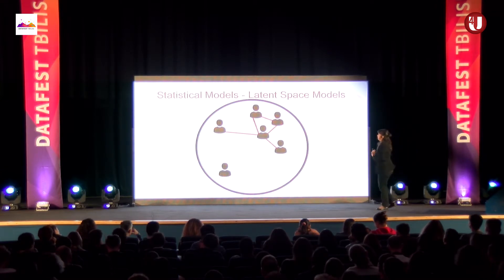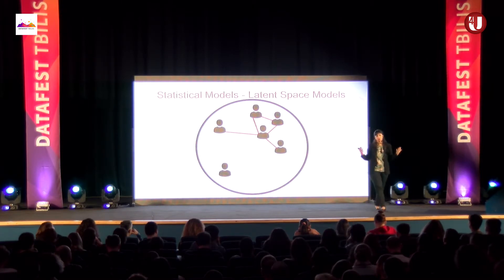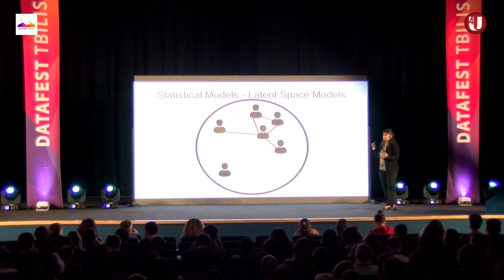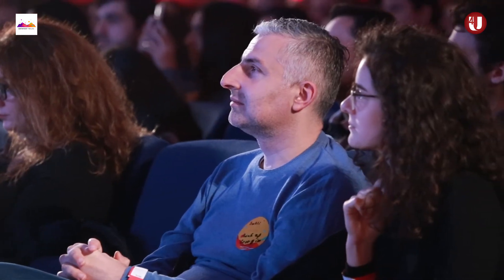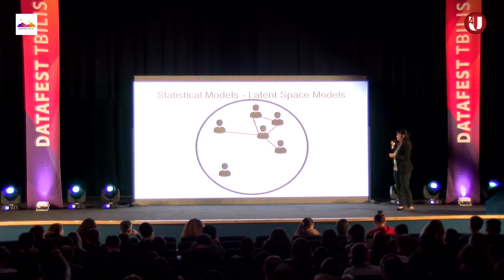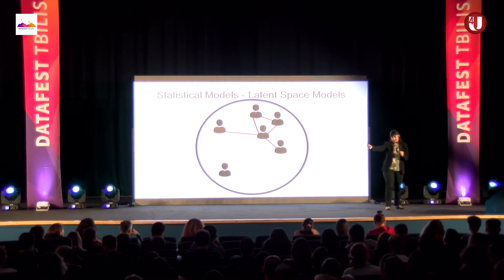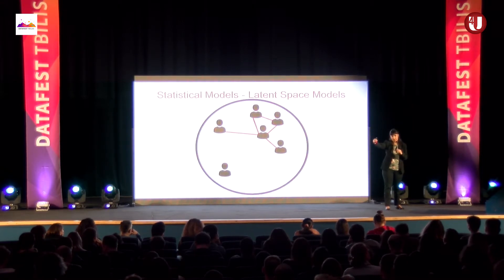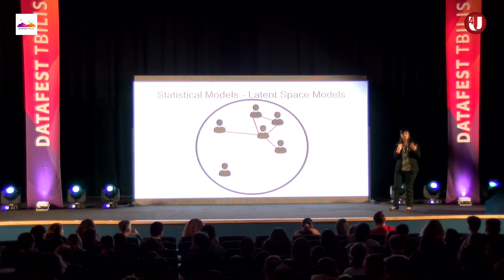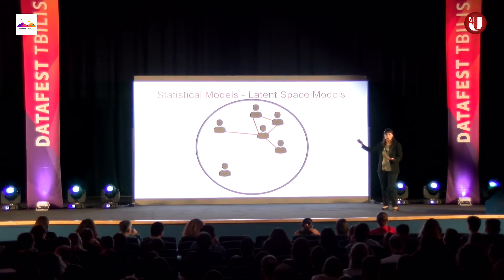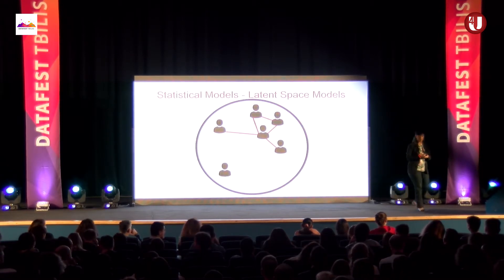The model also considers transitivity. For example, if I am calling one person and another person is also calling that same person, there is a higher probability that myself and that other person are also connected. This is a probabilistic statement — it's not necessarily true that a link exists, but we assess the probability of that link existing.